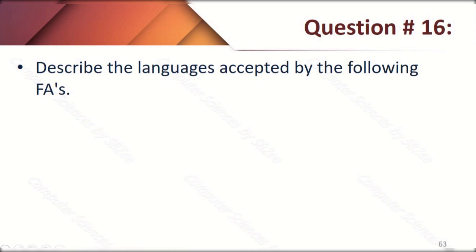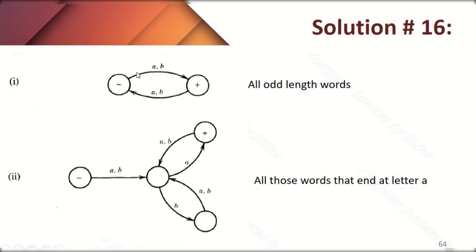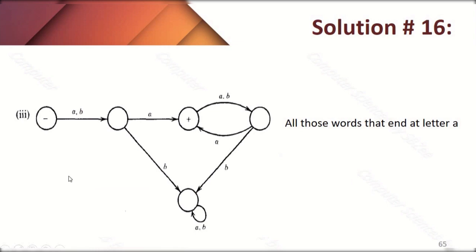Question sixteen: describe the languages accepted by each FA. Part one accepts all odd-length words — single 'A' or 'B' gives length 1, length 3, and the loop generates length 5, so all odd-length words are accepted. Part two accepts all words that end in letter 'A', since the 'A' transition moves toward the final state. Part three also accepts all words that end in letter 'A', because both transitions reaching the final state use letter 'A'.